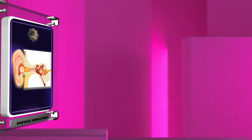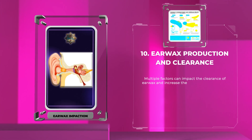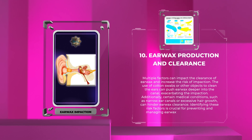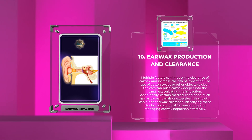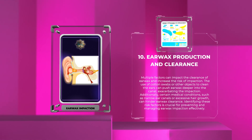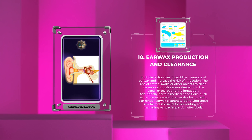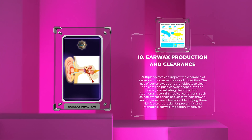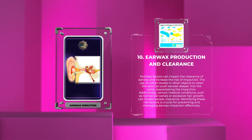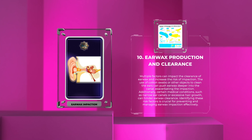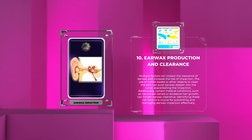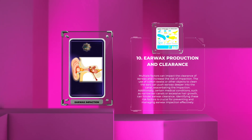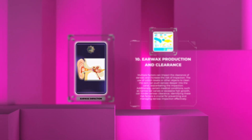Multiple factors can impact the clearance of earwax and increase the risk of impaction. The use of cotton swabs or other objects to clean the ears can push earwax deeper into the canal, exacerbating the impaction. Additionally, certain medical conditions such as narrow ear canals or excessive hair growth can hinder earwax clearance. Identifying these risk factors is crucial for preventing and managing earwax impaction effectively.